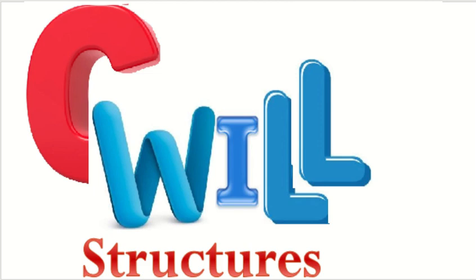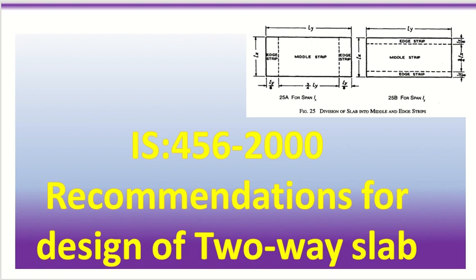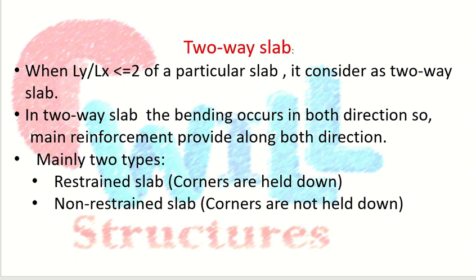Hello friends, welcome to my channel Civil Structures. Today we will discuss some basic recommendations for design of two-way slabs given in IS code. We know we can distinguish one-way slab and two-way slab by the ratio of longer span to shorter span. If this ratio is less than or equal to two, we consider it a two-way slab, and if it is more than two, we design it as a one-way slab.